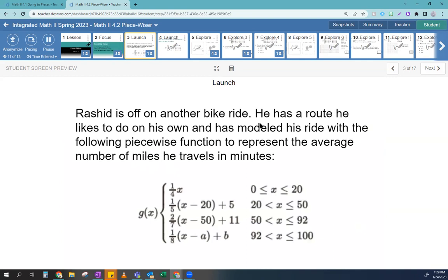So Rashid is off on another bike ride and he has a route that he likes to do on his own and has modeled his ride with the following piecewise functions to represent the average number of miles he travels in minutes. So far so good. So remember we called these sub functions. We called this domain, right? There should be an equal to sign here. I don't know why I didn't catch that, but I didn't.